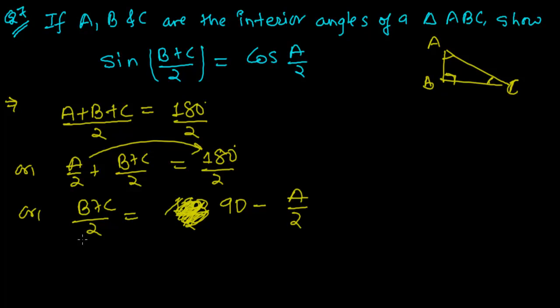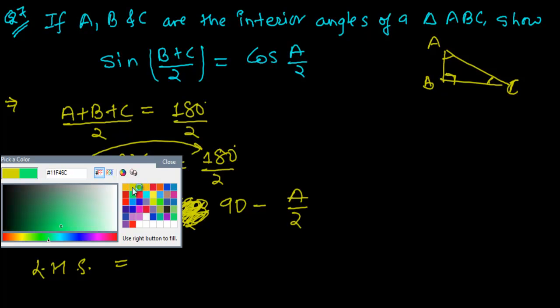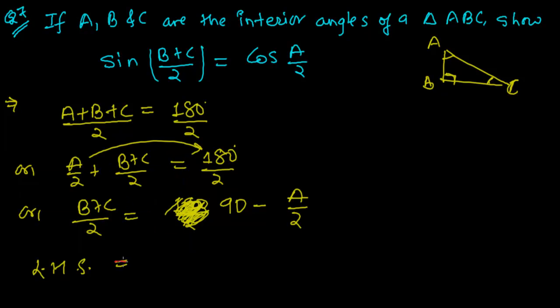And then, let's solve this. Let me write the LHS side and let me change the color. So now the left hand side is sin of (B+C)/2. Now, sin of (B+C)/2, what do we have to find out?